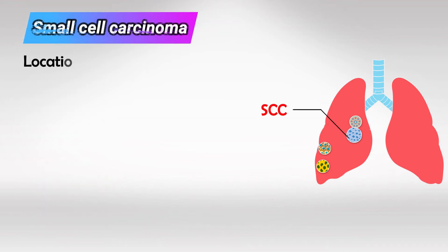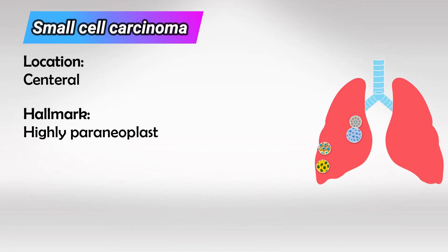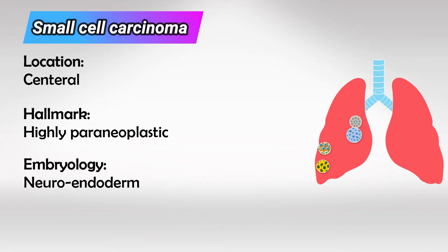Also in the center, we have small cell cancer. These are highly paraneoplastic, secreting many hormones — they can cause Cushing's syndrome, syndrome of inappropriate ADH, and Lambert-Eaton syndrome. The reason they are highly paraneoplastic is that they share endocrine origin. During embryology, they arise from the neuroendoderm, which gives them nerve cell markers and endocrine characteristics, so they can release a lot of hormones.